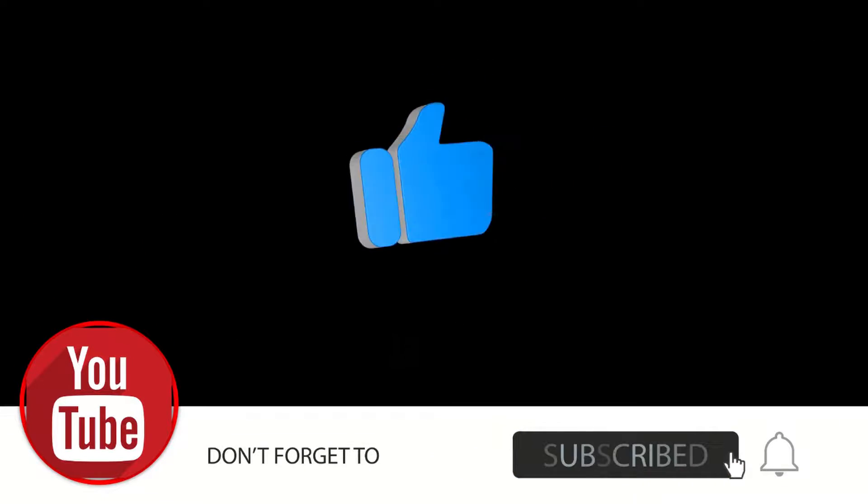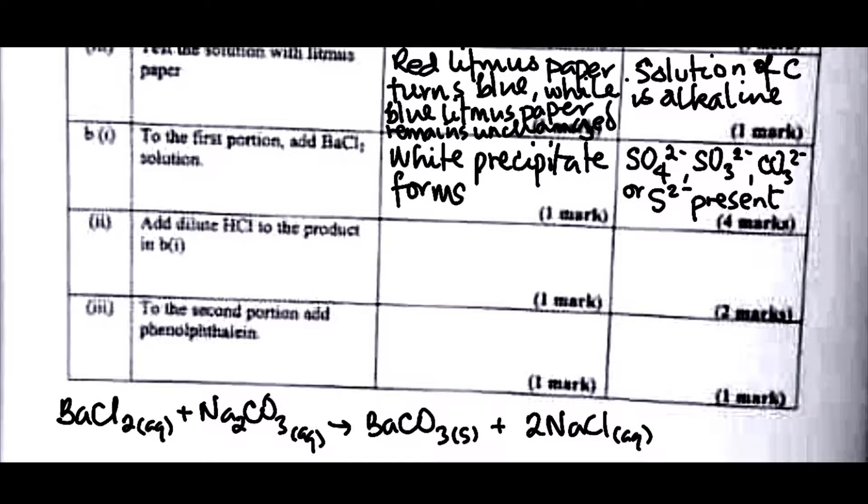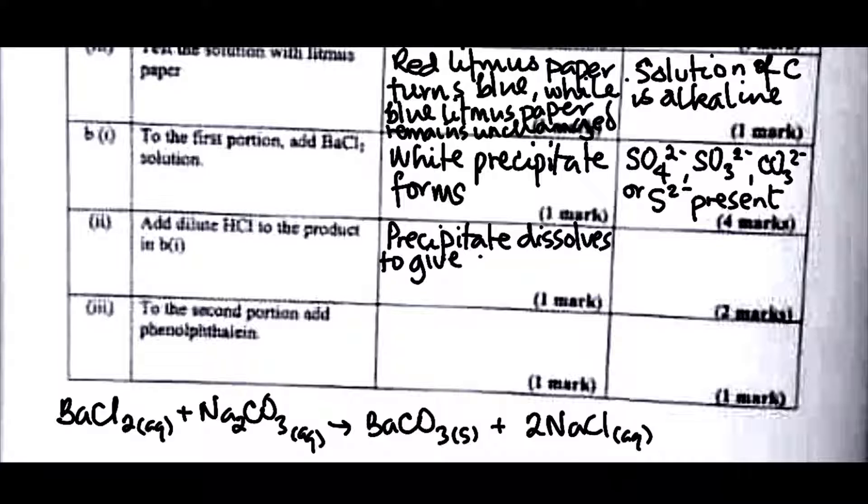Now it is the next test that will somehow tell us which of them is not present or that is present. Add dilute HCl to the product in b(i). When you added dilute HCl to the product in b(i), the precipitate dissolves. So precipitate dissolves to give a colorless solution.